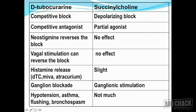If there is vagal stimulation, the D-tubocurarine block could be reversed; in the case of succinylcholine there is no such effect. D-tubocurarine is known to release histamine, whereas succinylcholine releases only a slight amount of histamine. D-tubocurarine can produce ganglionic blockade because it is a receptor blocking agent, whereas succinylcholine, being a cholinergic agent, can produce ganglionic stimulation.